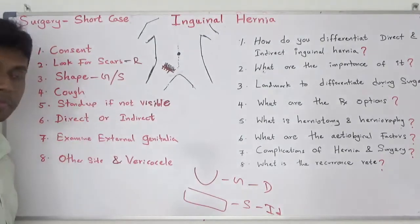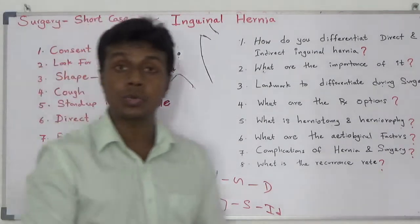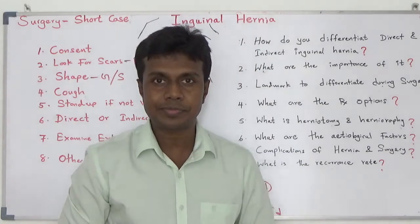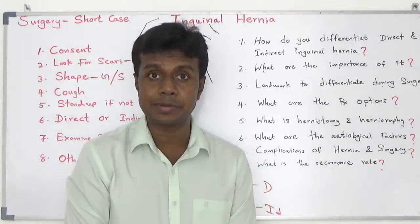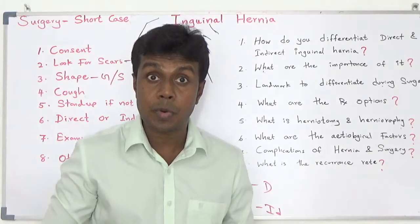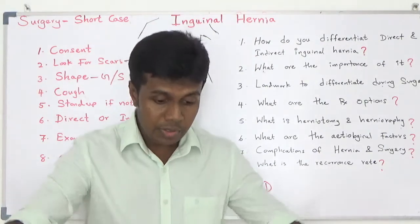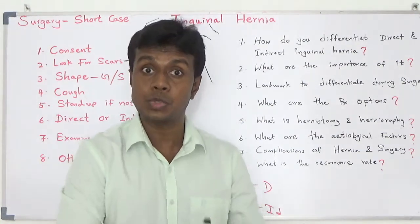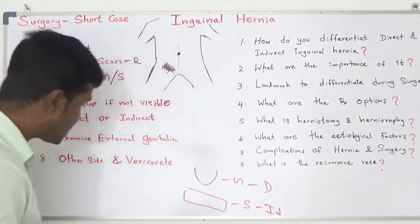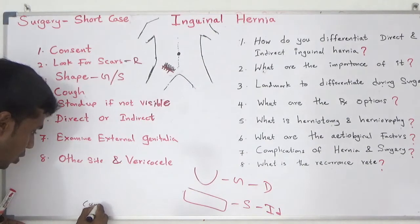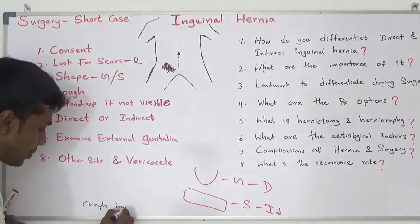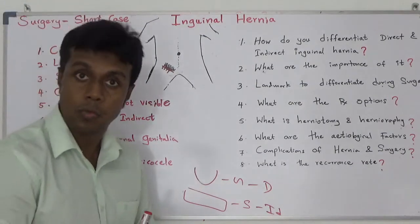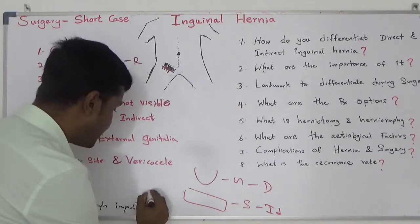Next: cough. Ask your patient to cough. With that, it increases intra-abdominal pressure and your lump will become more prominent. You can see the lump come and go with the cough — a cough impulse is visible.